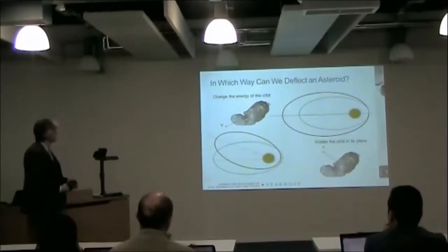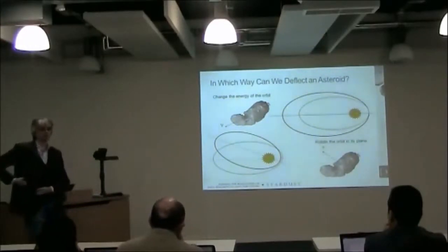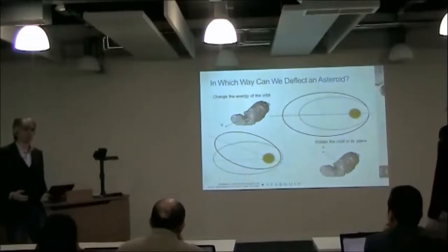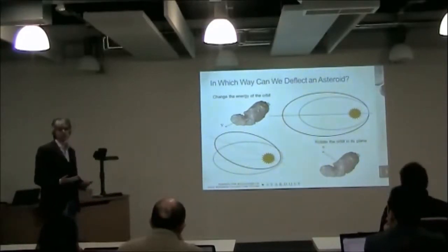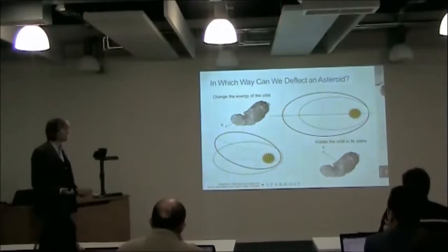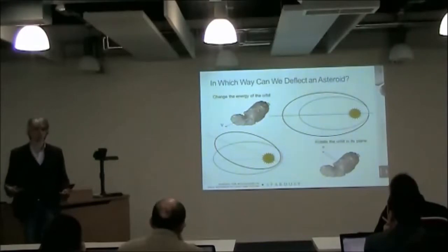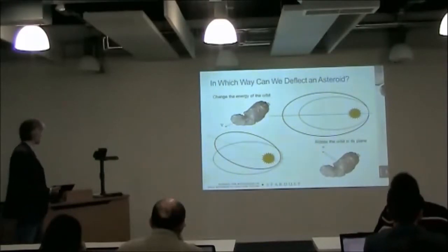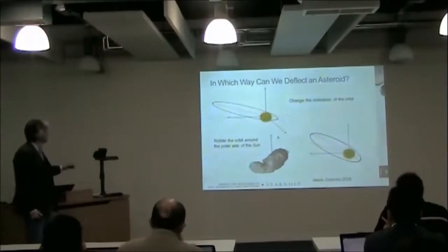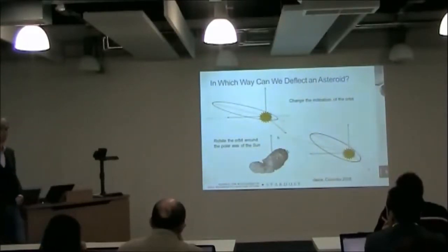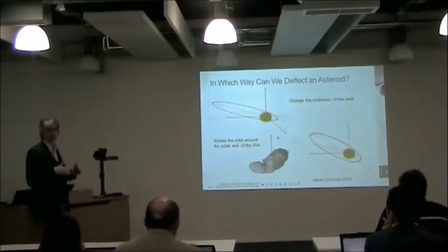If you try to hit in the direction of motion, what you change is typically the eccentricity and the semi-major axis, and therefore also the period of the orbit. If you hit sideways, one thing that you might change is the orientation in the orbit plane of the asteroid. And if you hit out of plane, you can change the orientation of the orbit plane or the inclination.